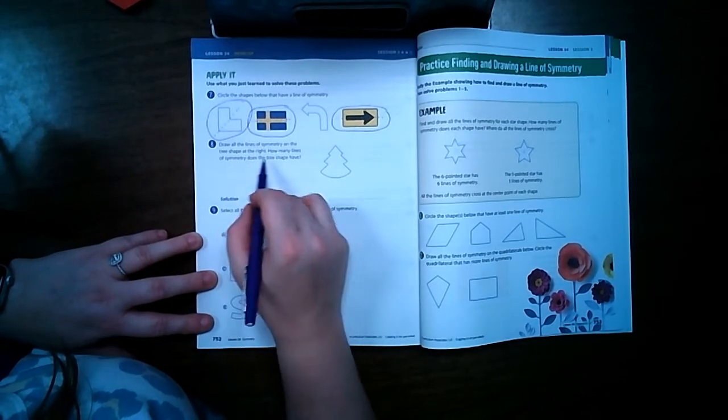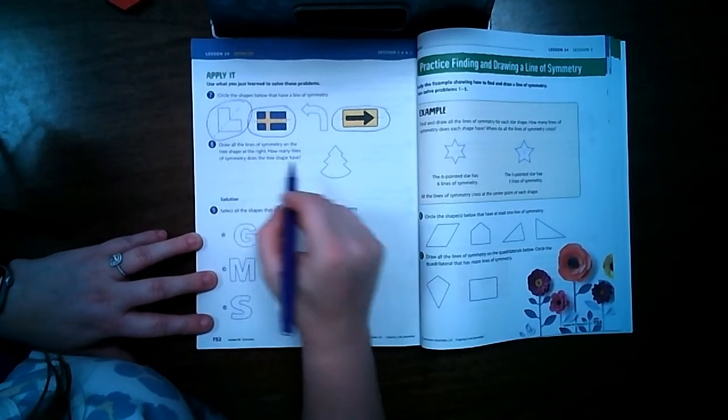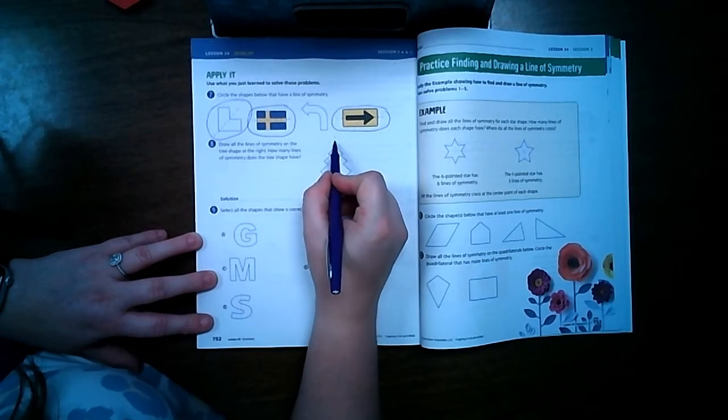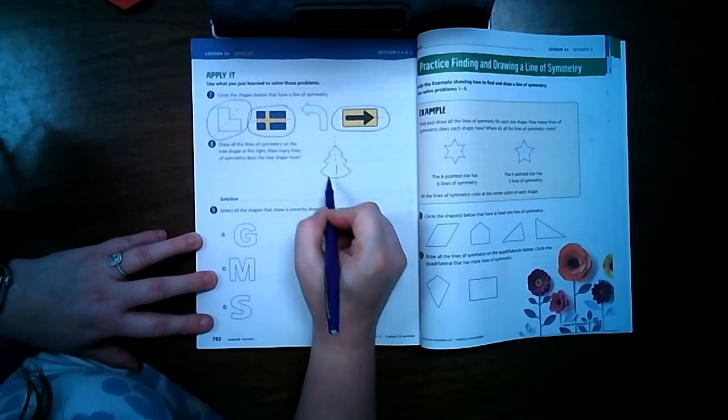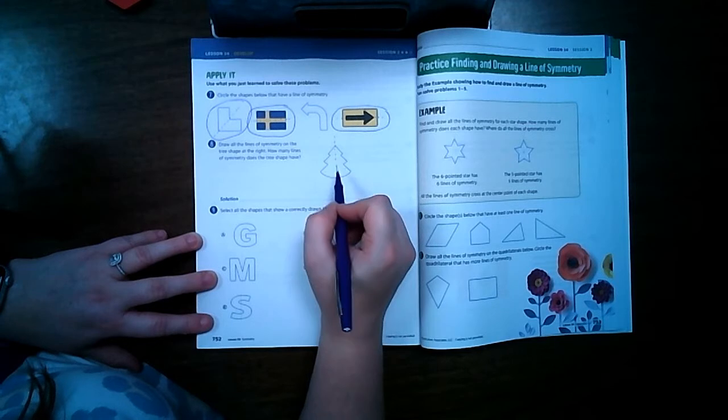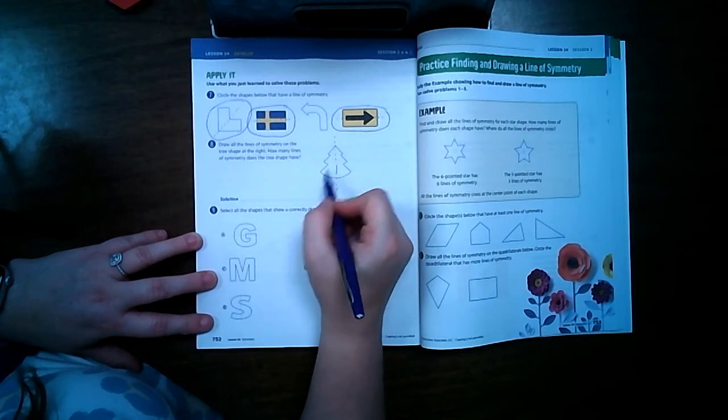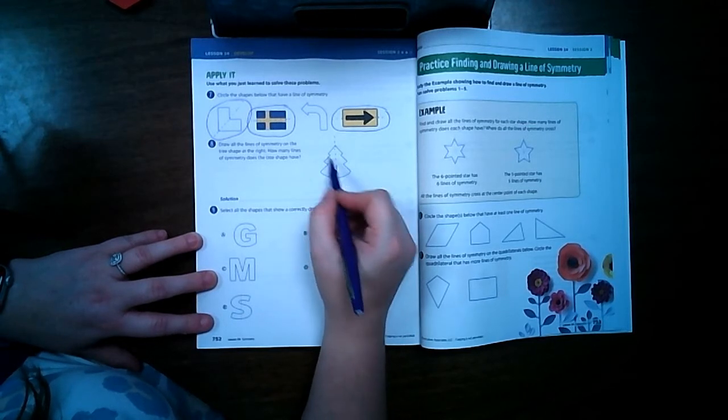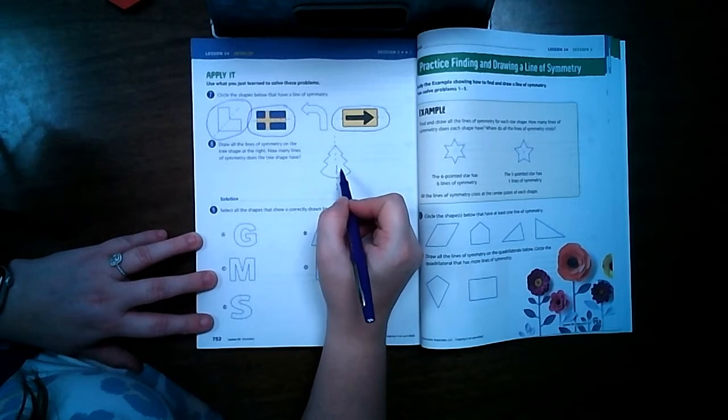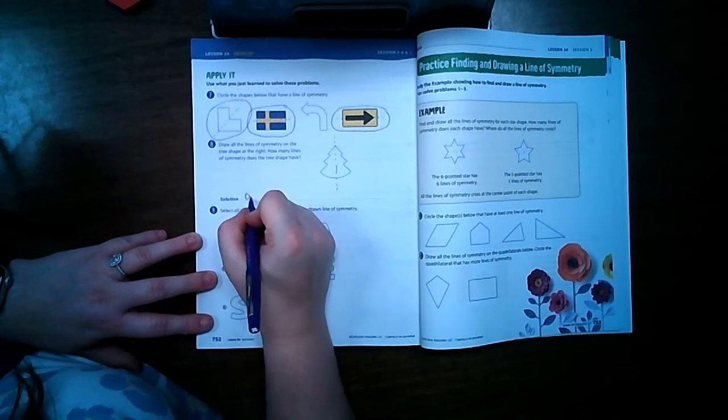Draw all the lines of symmetry on the tree at the right. How many lines of symmetry does the tree have? Well obviously the easiest one's this way. We can't go that way because the top is smaller than this, can't go this way because this side is smaller than that side. So this one has one line of symmetry.